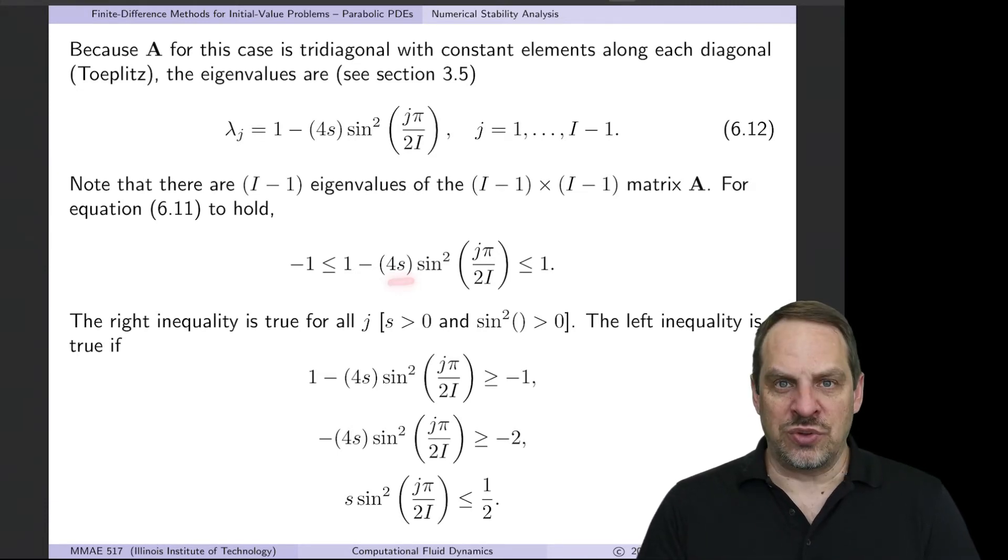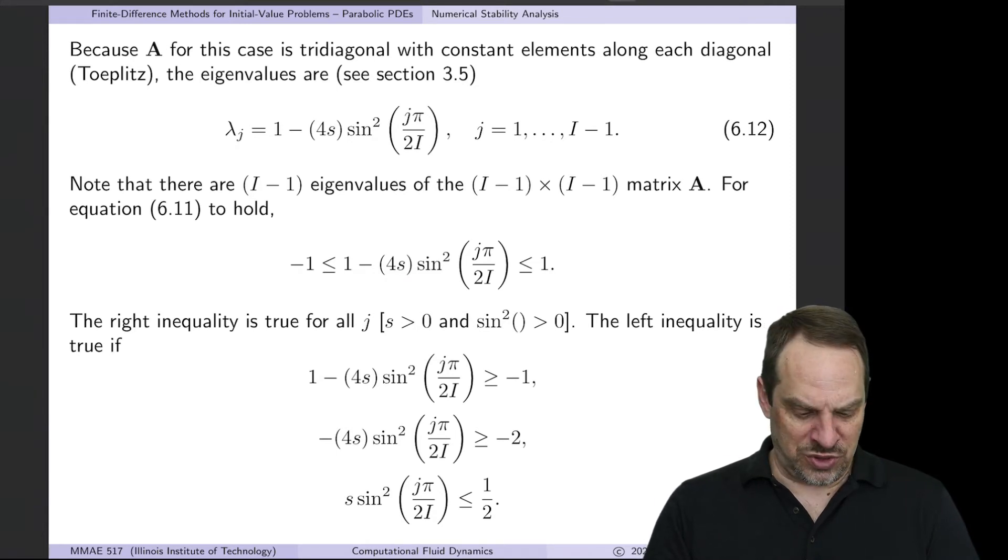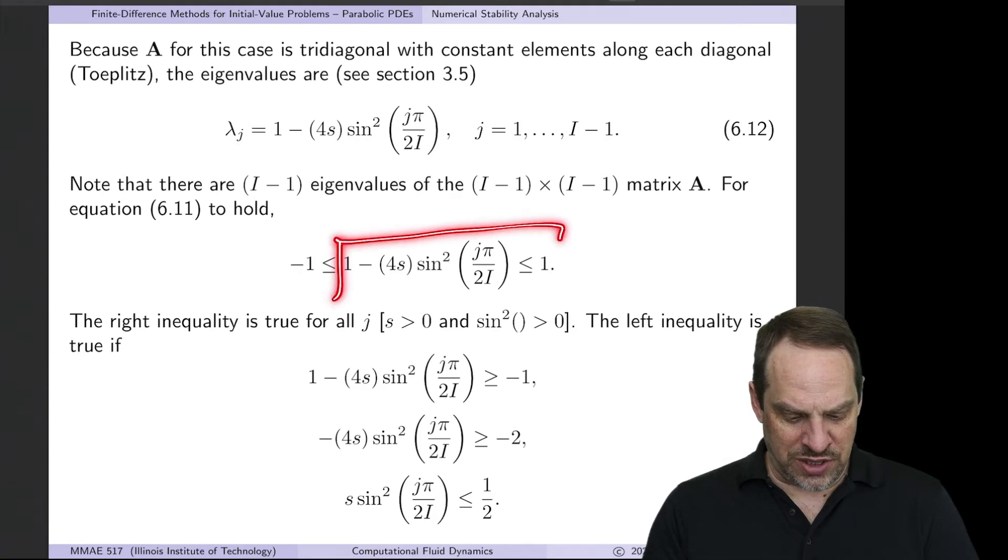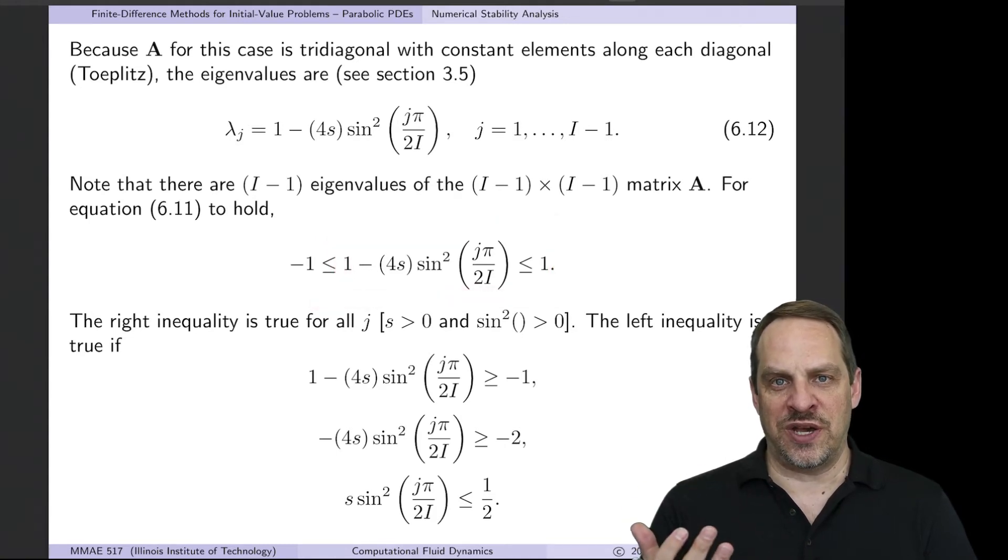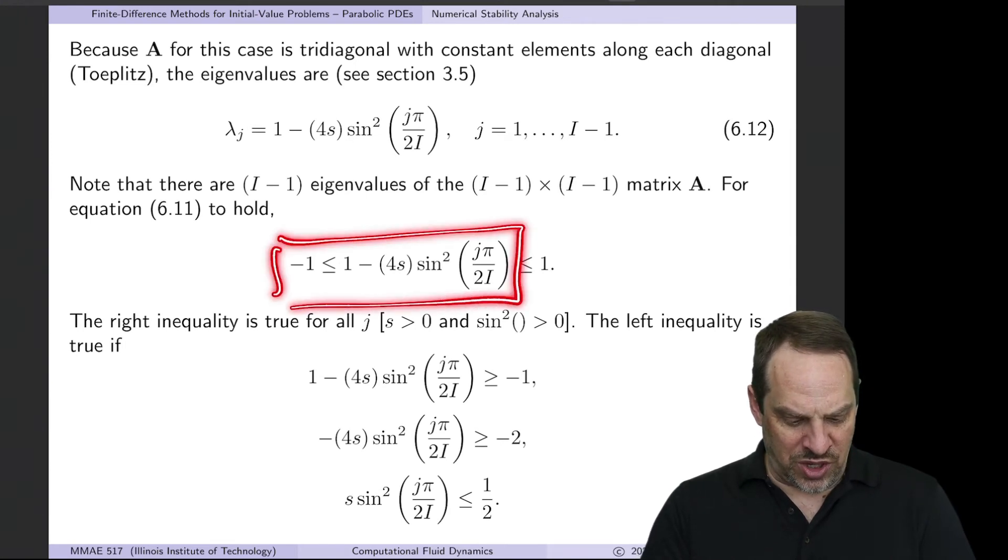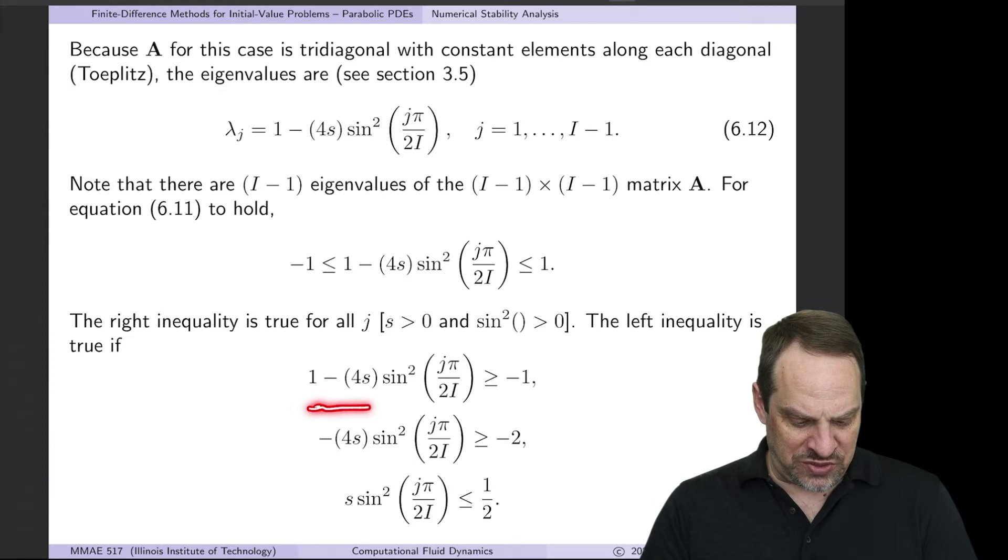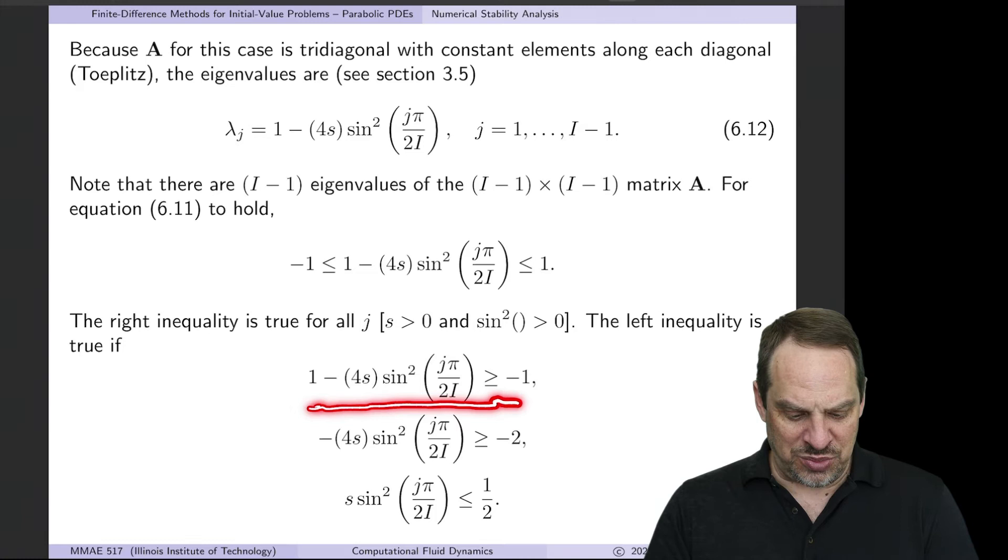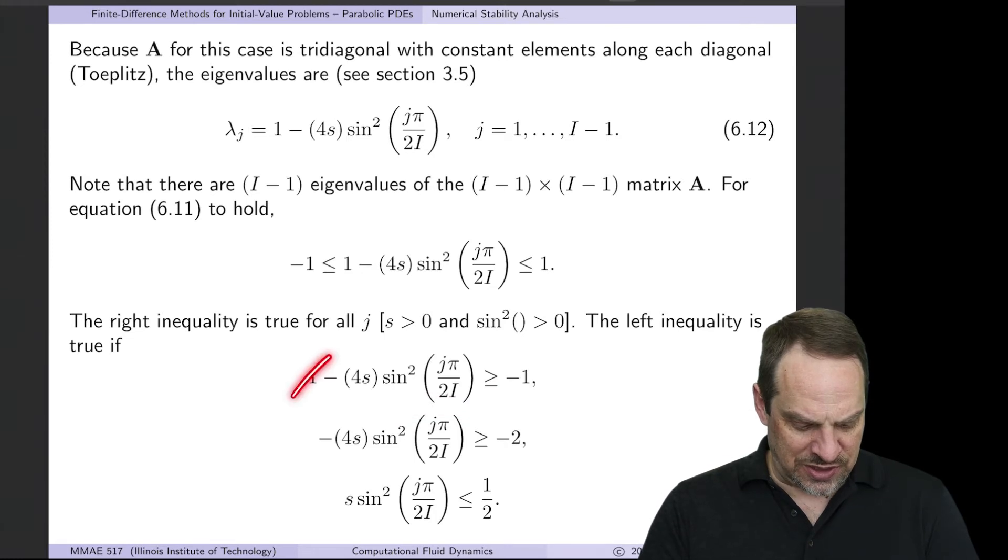Well, the s here is always positive. That's alpha delta t over delta x squared. That's always positive. Sine squared is always positive. And so 1 minus a positive number is always going to be less than 1. So the right inequality is satisfied for any positive value of s. And again, s has to be positive. So that leaves us with the left inequality that we need to check for. So that says that 1 minus 4s times sine squared of j pi over 2 cap I has to be greater than equal to minus 1. So let's see what this says about s.